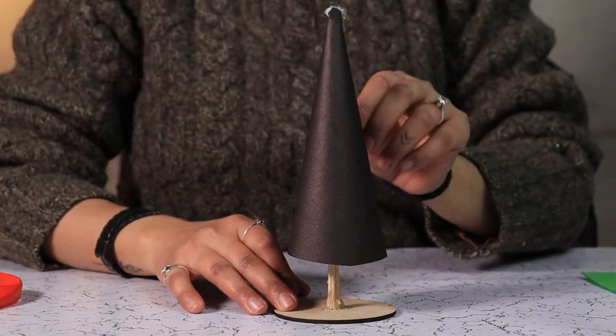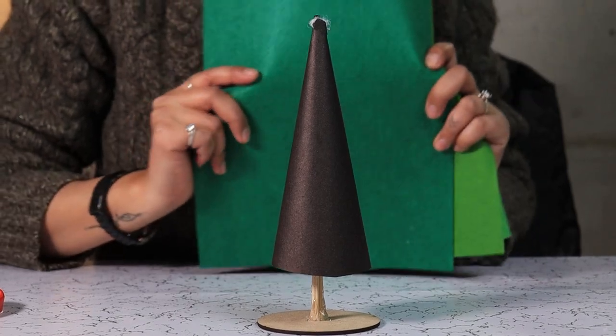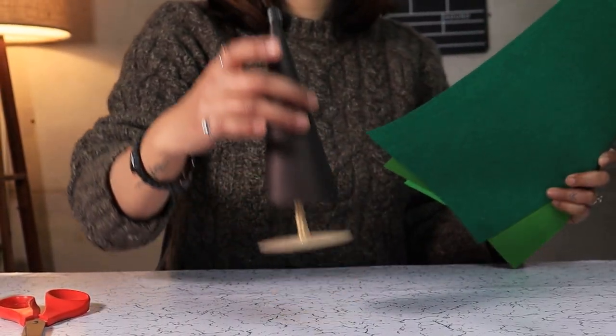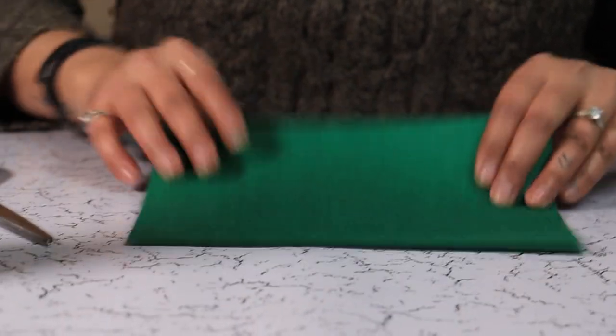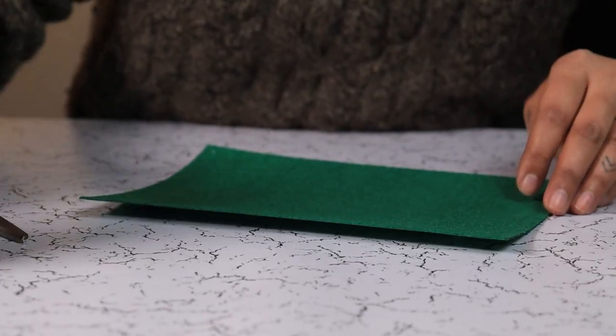Now here is our base. We are going to cut out these felt sheets and glue them on this cone. We are using the darkest shade of green at the bottom layer.